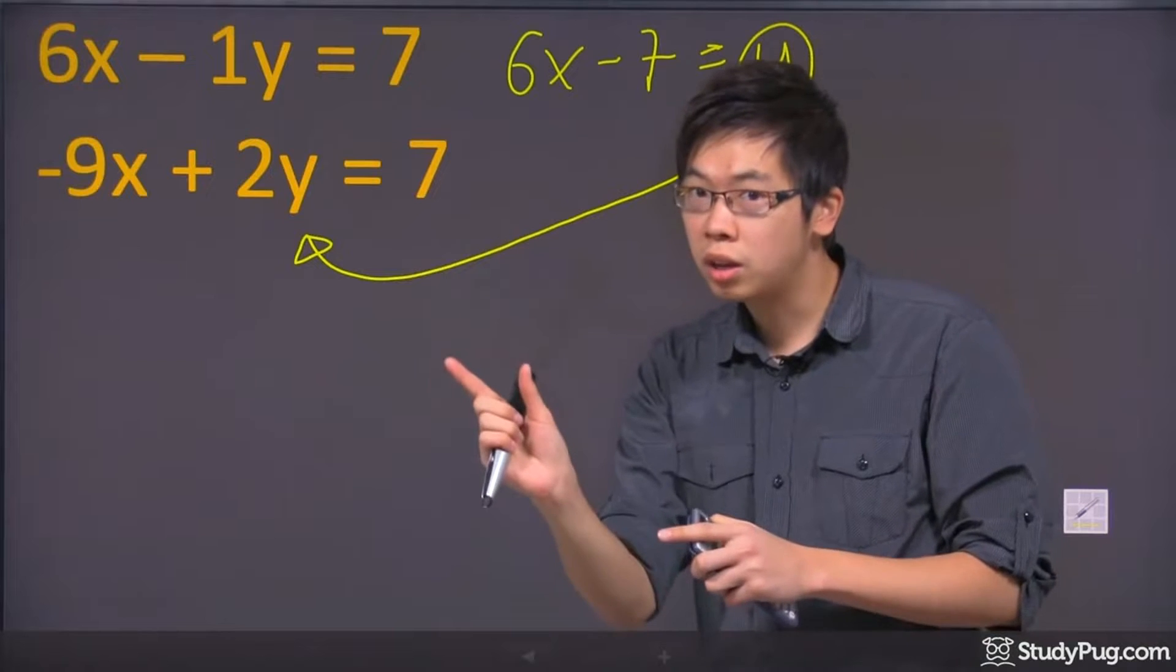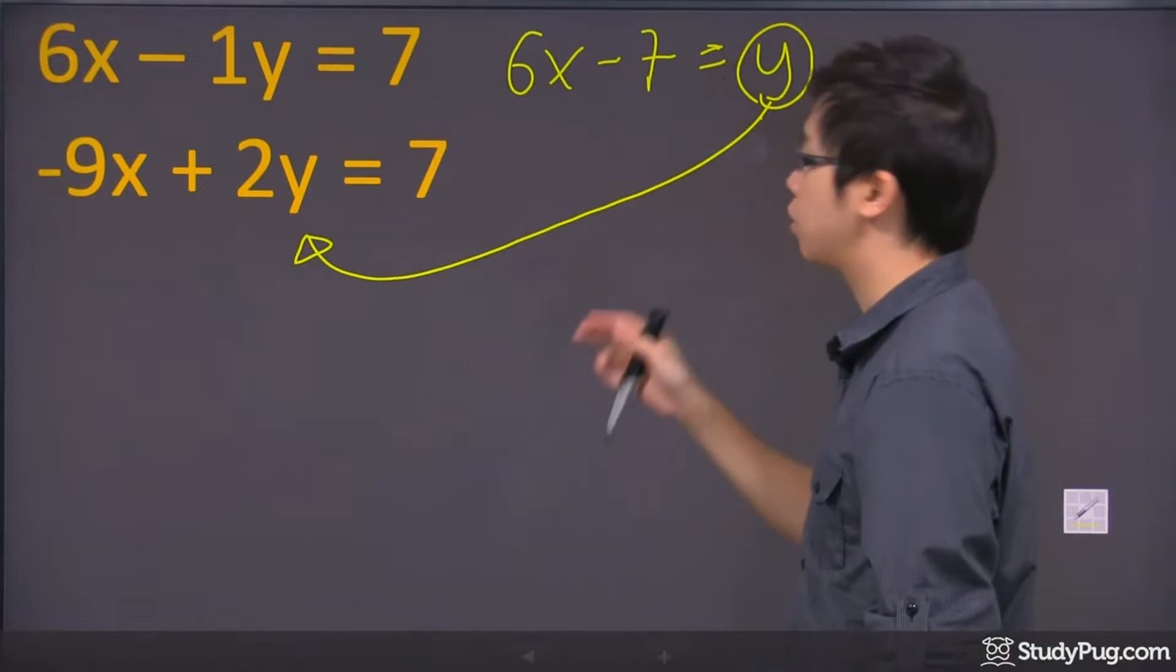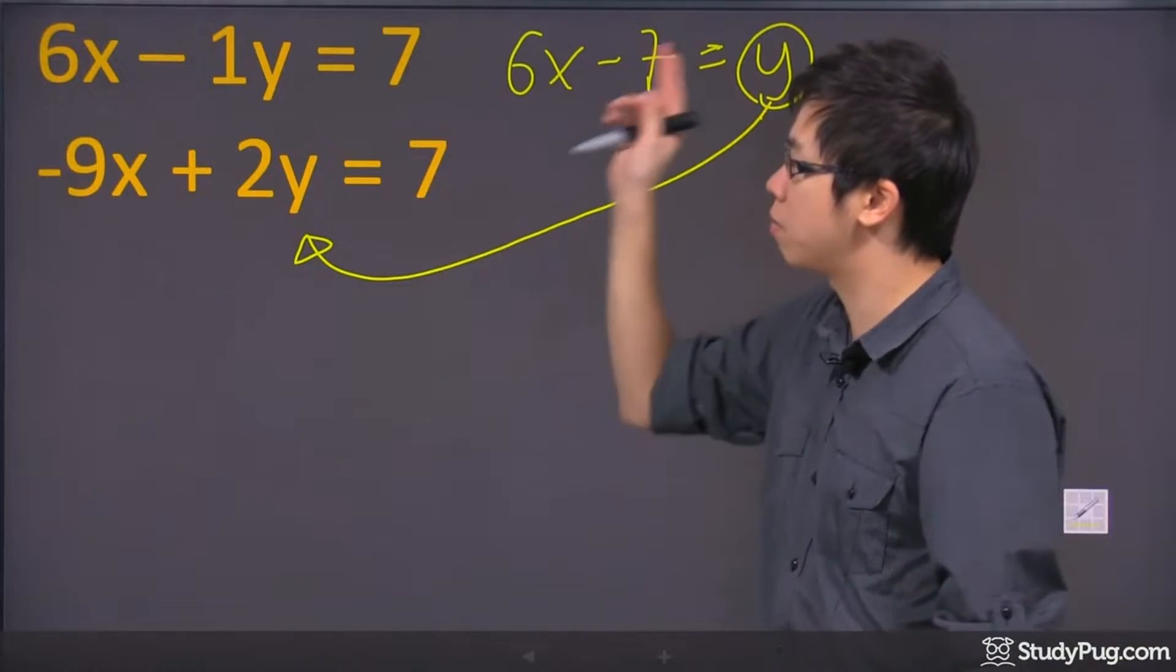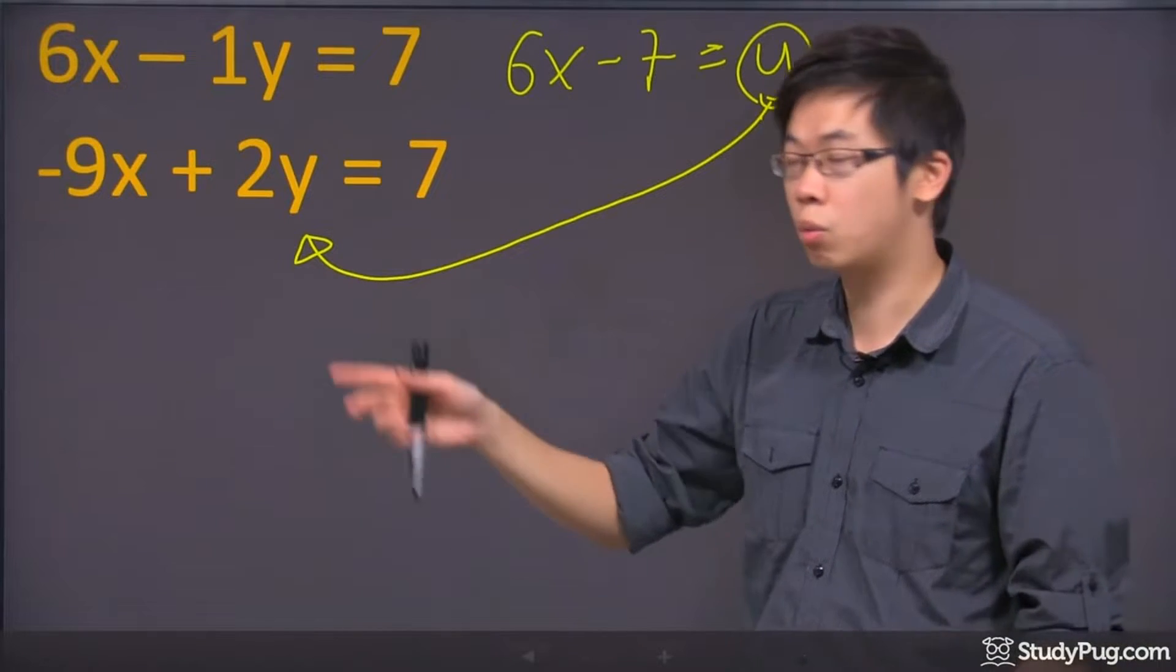Y goes into y because these two equations are equal somewhere on the graph. So their x and y, which is a coordinate, would be the same. That's why I'm allowed to actually take this y here and plug into the another equation y.